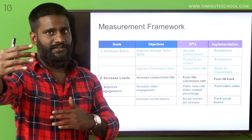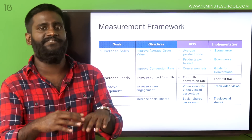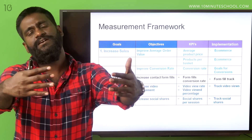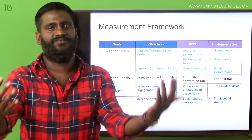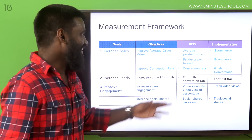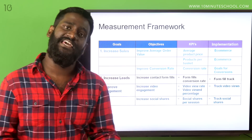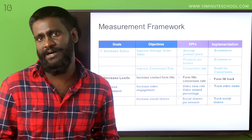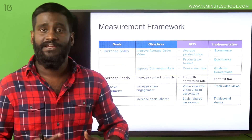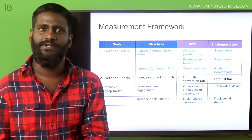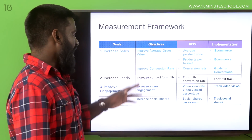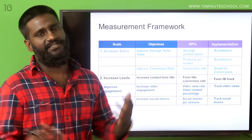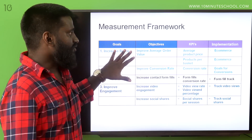For example, if I'm selling 500 taka items now, I can push that up — maybe 5000, up to you. Then products per basket: let's say earlier there were only three products per basket per transaction, and now let's see if you can push that to five. And what is the KPI for conversion rate? It's conversion — very simple.